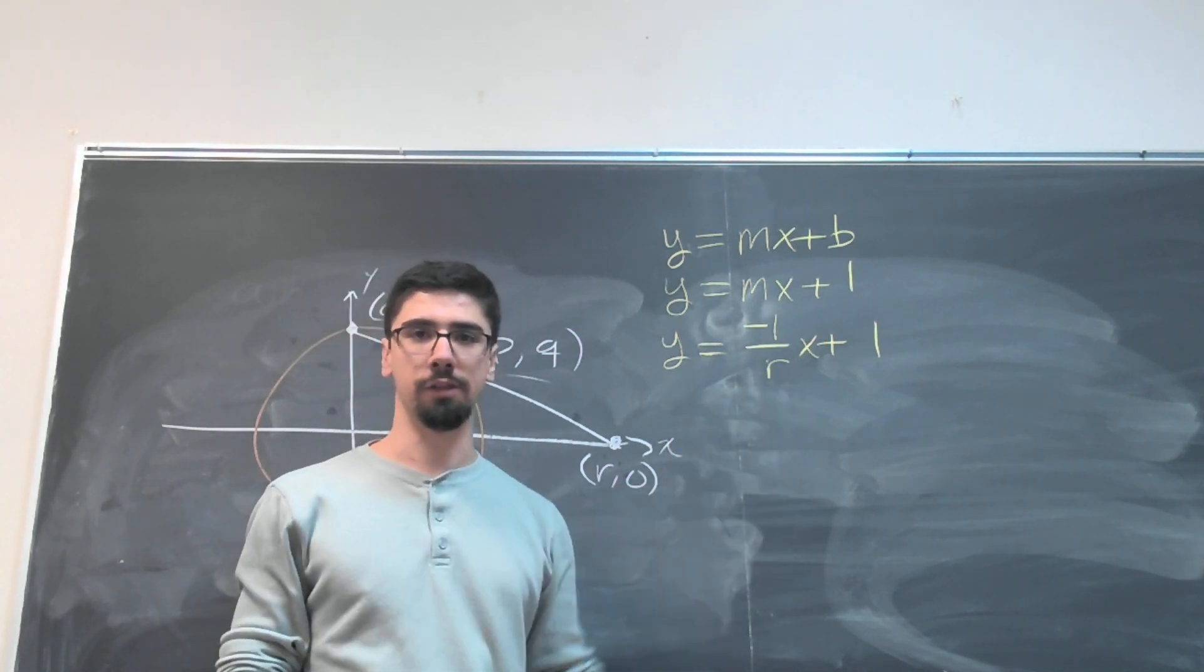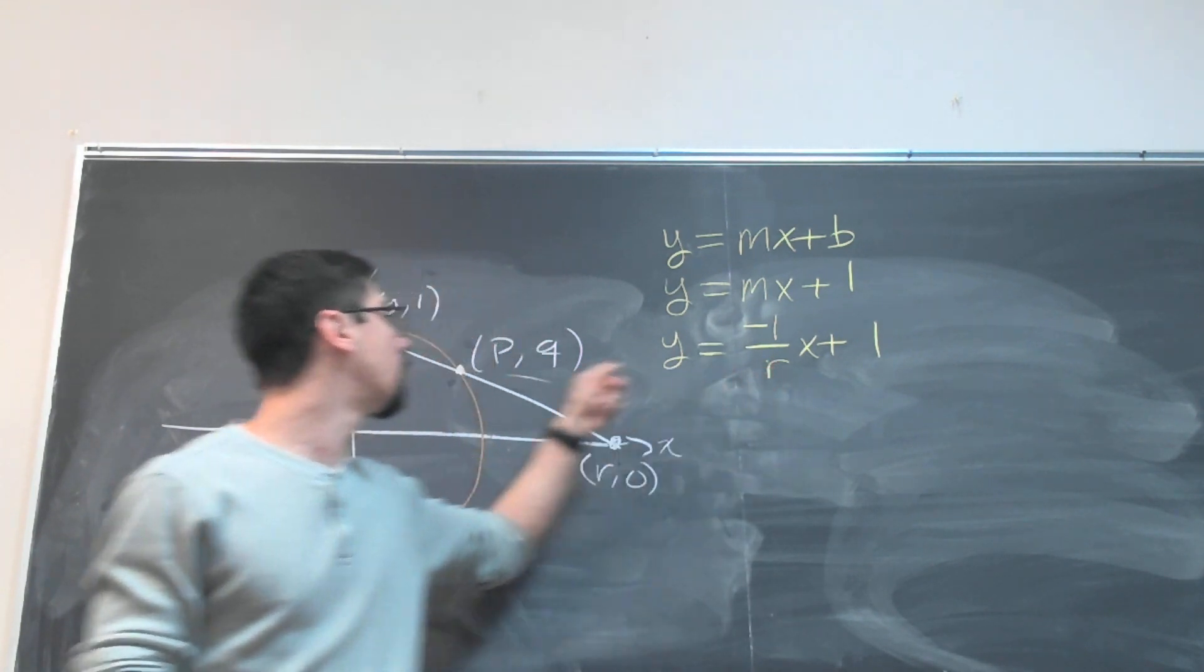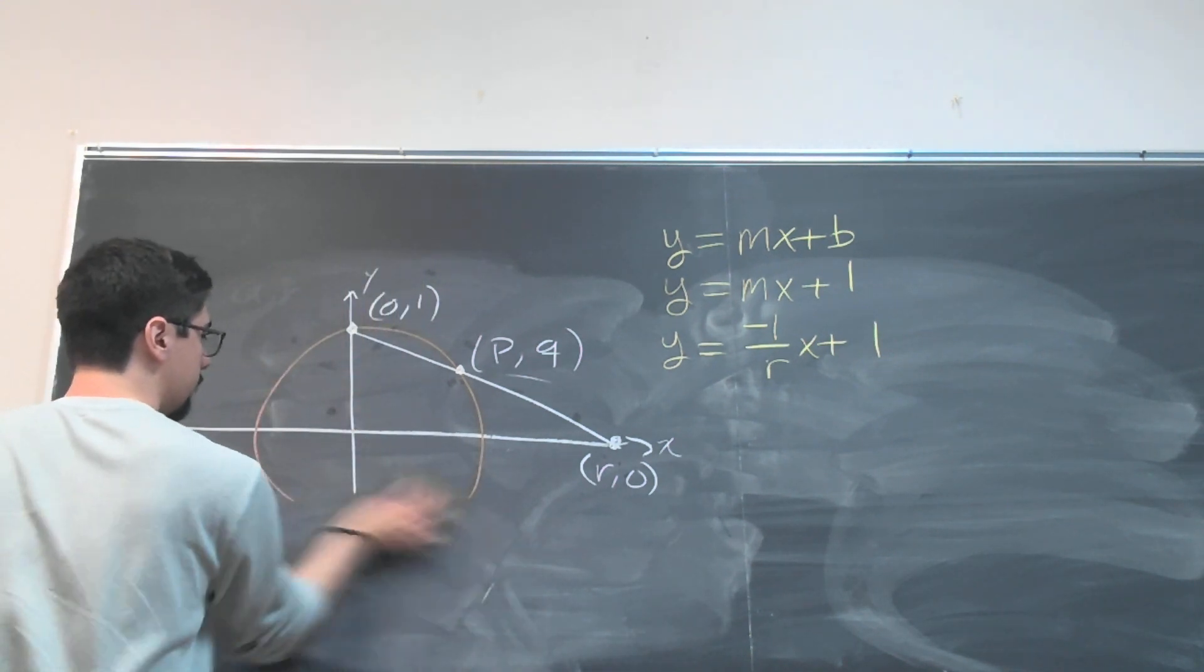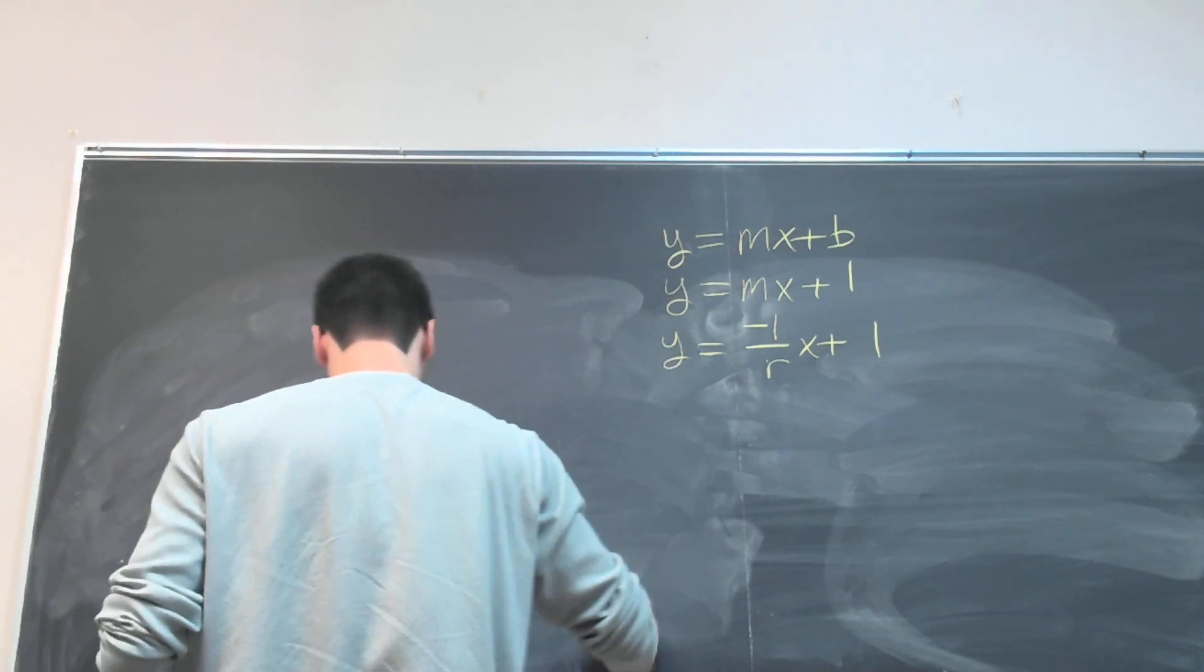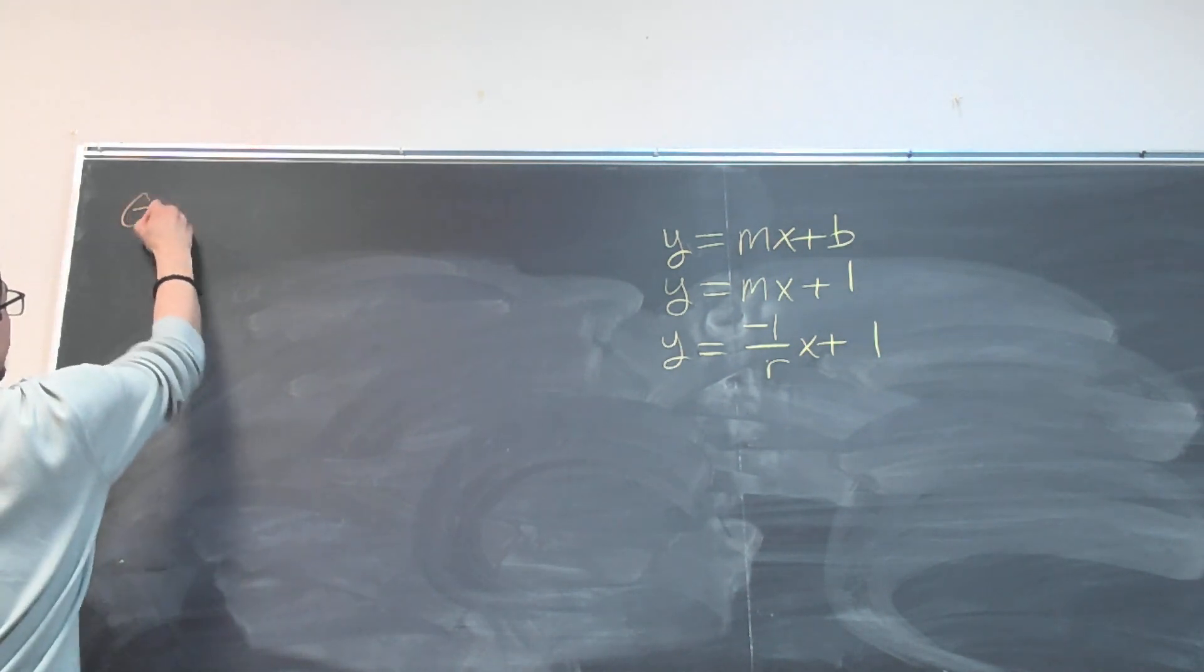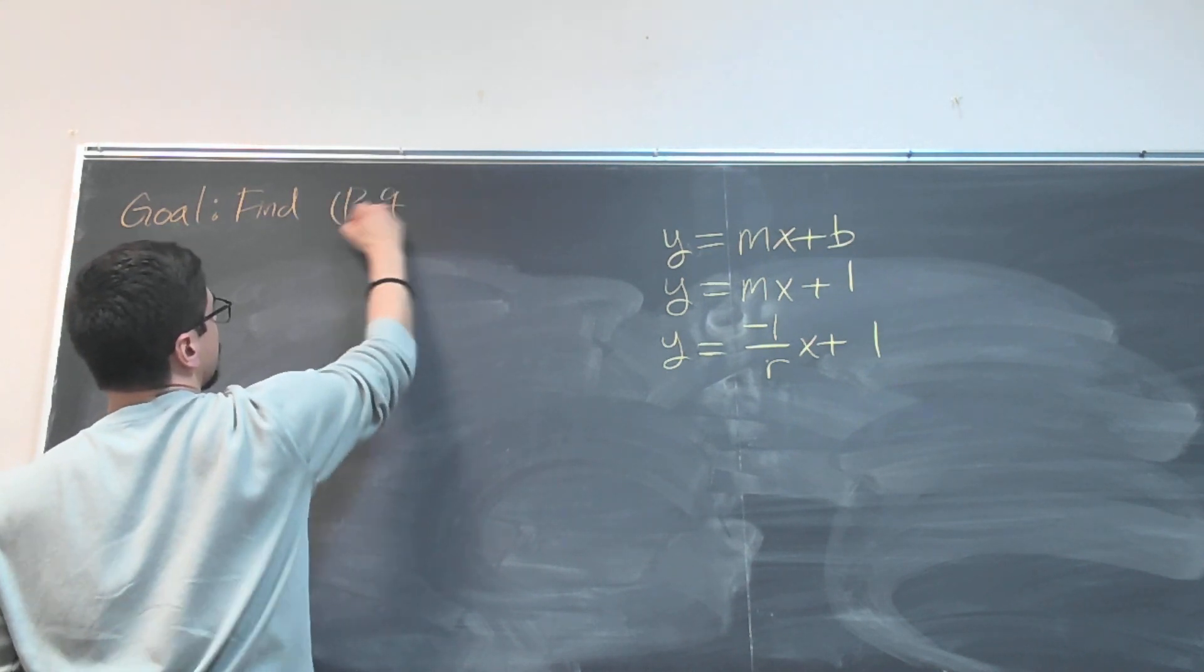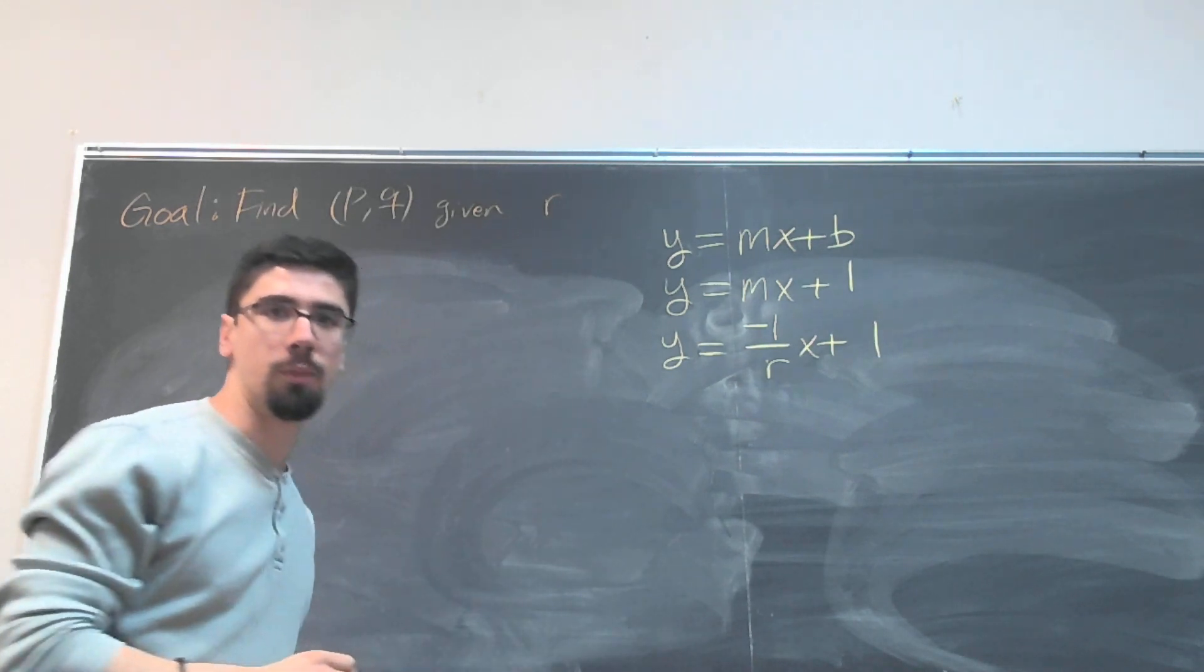Times x plus 1. And so now all we have to do then is use this information to figure out where it hits the circle. And so I'm going to go ahead and erase my circle picture here for a moment. So now we have a new goal. Our new goal is to find p and q given r, given the point where it hits the x-axis.